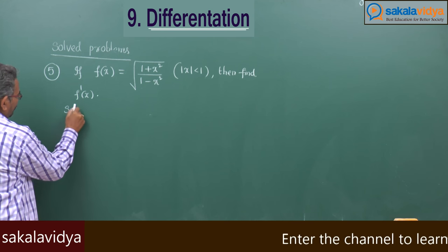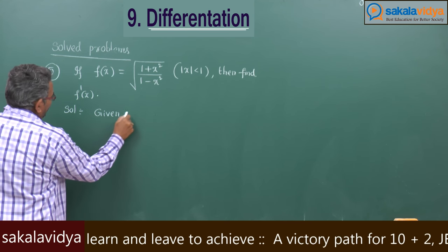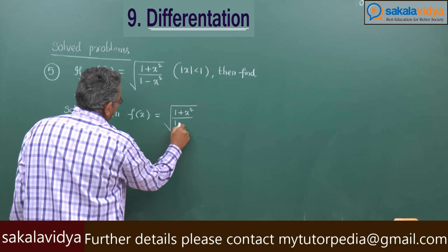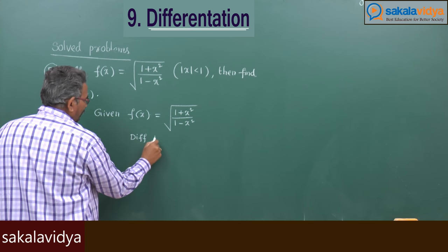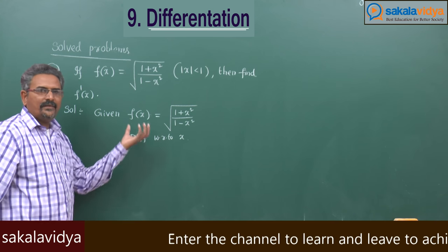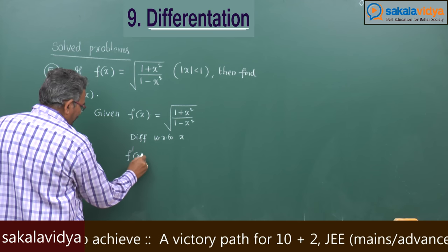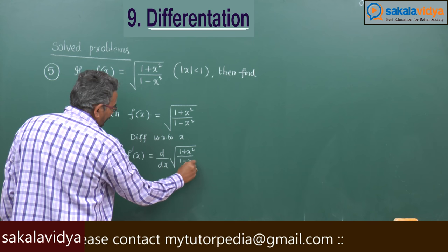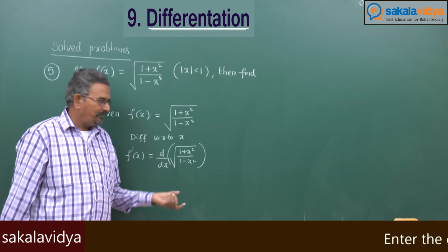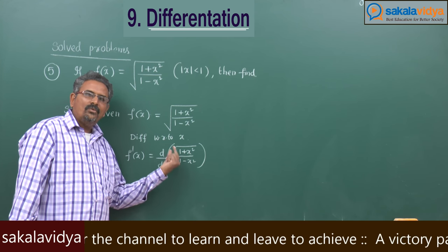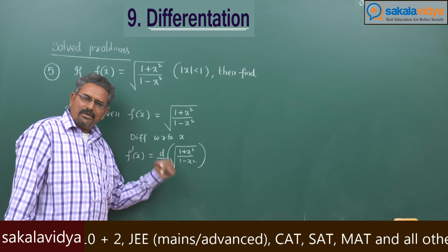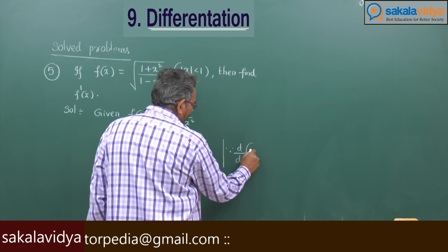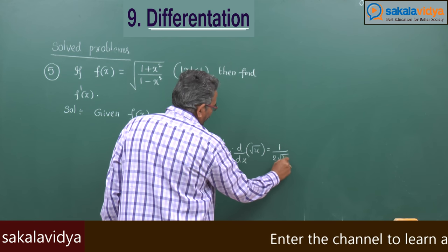In this problem, given f of x equals root of 1 plus x square by 1 minus x square, differentiate with respect to x. f of x becomes f dash x, equal to d by dx of root of 1 plus x square by 1 minus x square. Letting u equal 1 plus x square by 1 minus x square, the derivative of root u with respect to x is 1 by 2 root u into du by dx.